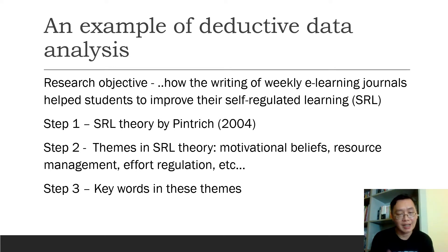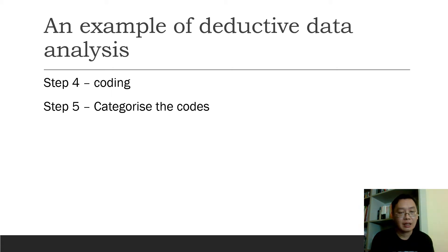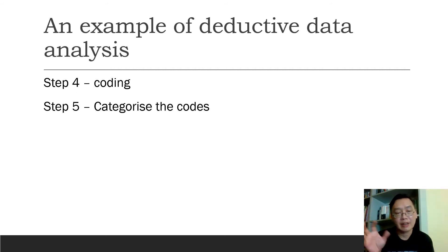For example, the themes include motivational beliefs, resource management, effort regulations, and so on. Step three: I need to identify the keywords in all these themes. Step four — coding: after I've got all the data, I need to run through all the data and identify the quotes and do my coding. Step five: after I've got all the quotes, I need to categorize them according to the themes.